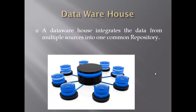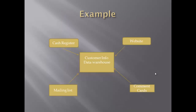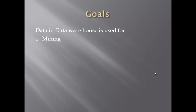It usually contains historical data. In a business world, a data warehouse might incorporate customer information from a company's point of sale system, i.e. cash register, its website, its mailing list and its loyalty cards. By using this information, analyses are made for business improvement. Data in a data warehouse is used for mining, querying and analyzing the data.